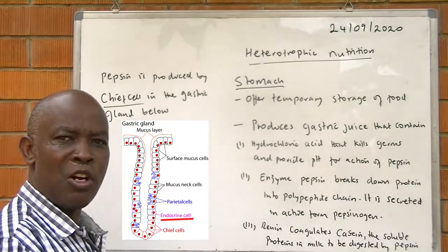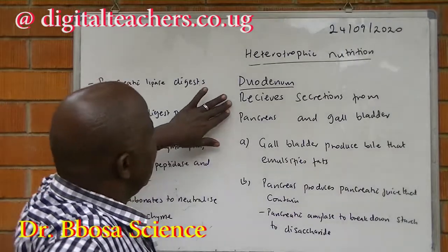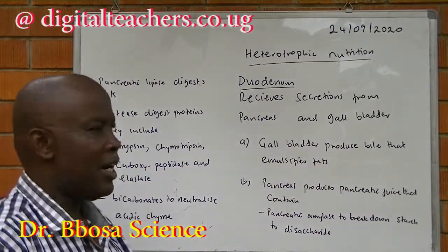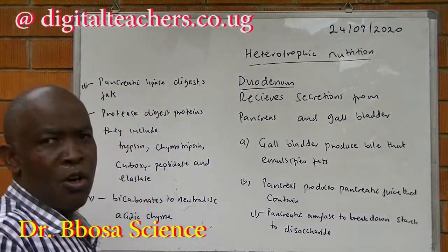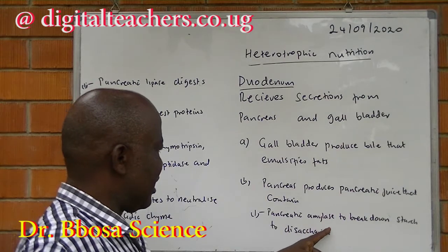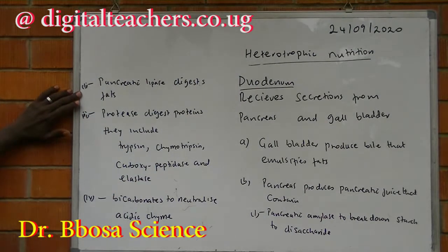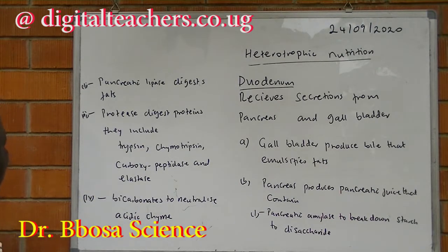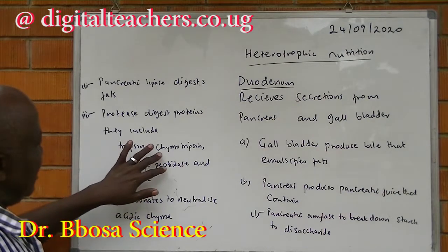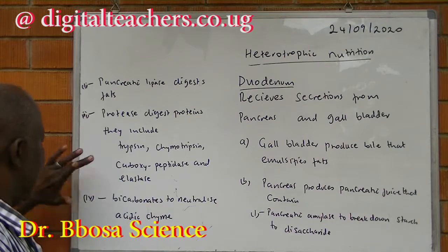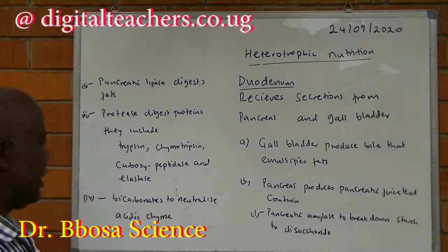The duodenum receives secretions from the pancreas and gallbladder. The gallbladder produces bile that emulsifies fats. The pancreas produces pancreatic juice, which contains: pancreatic amylase that breaks down starch to disaccharides; pancreatic lipase that digests fats; proteases that digest proteins — including trypsin, chymotrypsin, carboxypeptidase, and elastase; and bicarbonates that neutralize acidity.